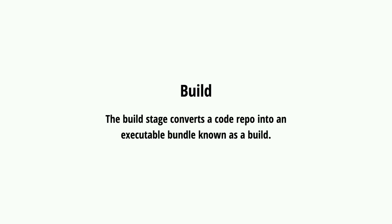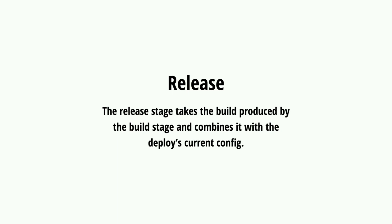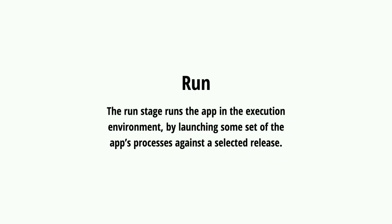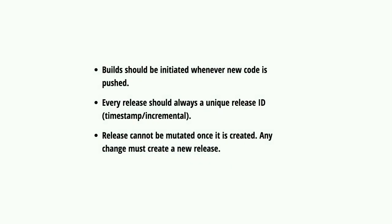The last piece of the workflow is building the artifact and pushing to a specific server. We have build, release, and run. Build is the process or stage that converts your code repo into an executable bundle - the one that gets the dependencies using Composer, and also runs Yarn or NPM if needed. Release is the stage that takes this configuration and mixes it with the code for a specific environment. Run is the process of having your site running. It's good practice to run builds whenever new code is pushed - any pull request should start the build for you.